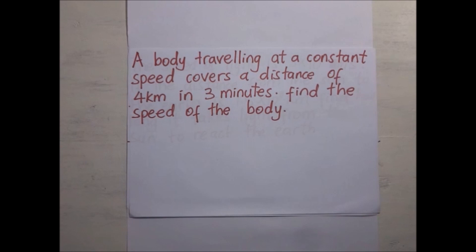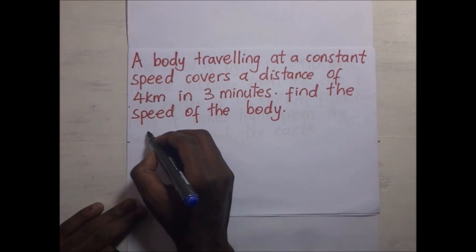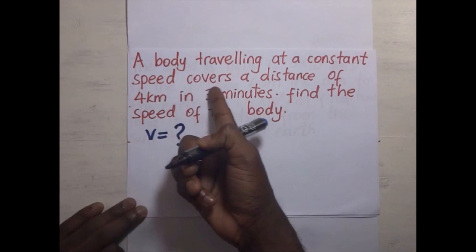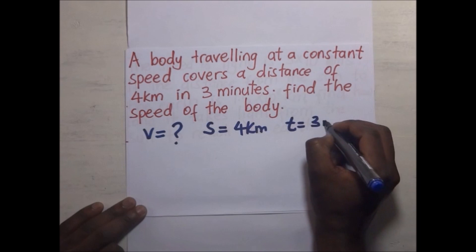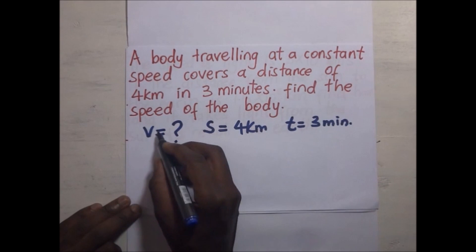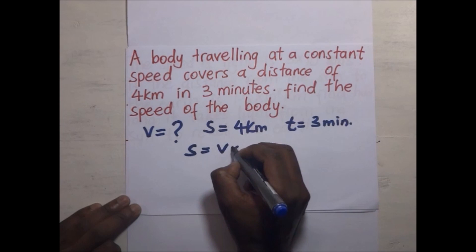Next example: a body traveling at constant speed covers a distance of 4 kilometers in 3 minutes — find the speed. The constant speed V is not given; we need to find it. The distance S is 4 kilometers and the time is 3 minutes. We need to find the speed of the body using the formula distance equals speed times time.